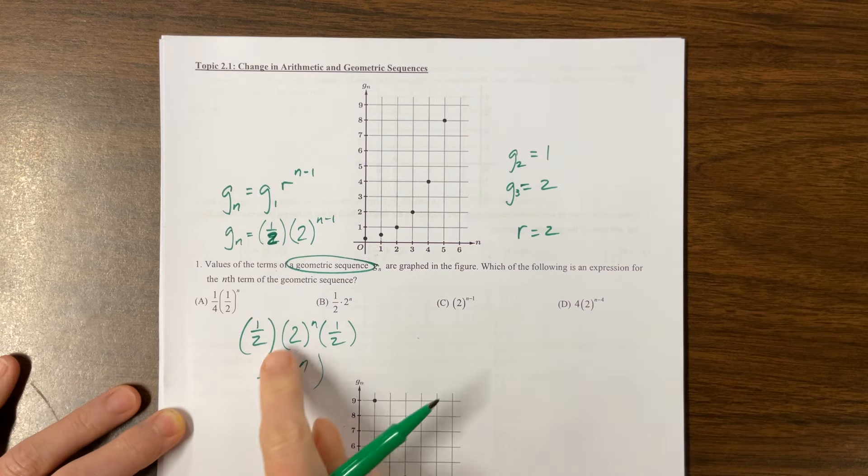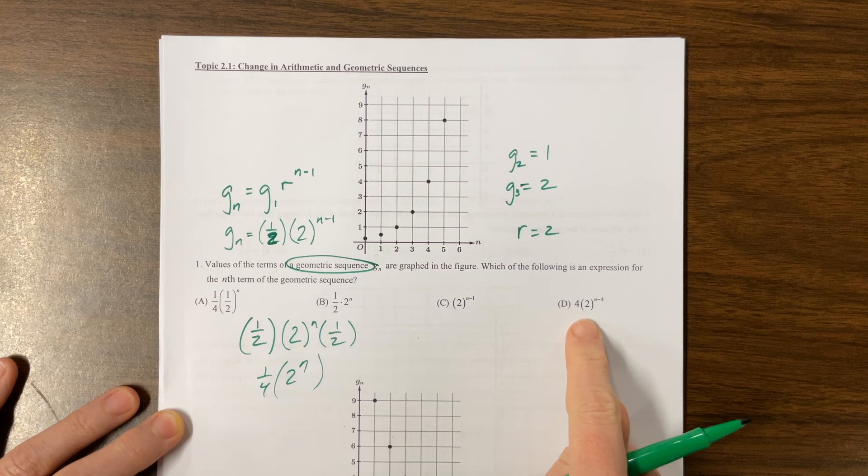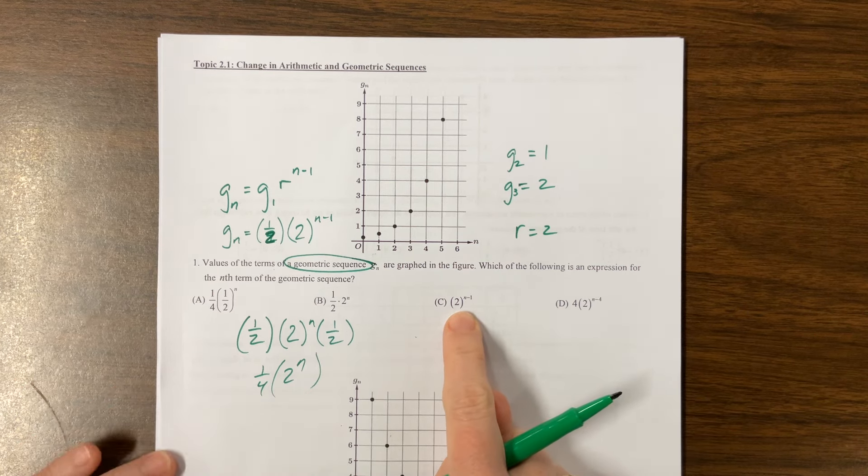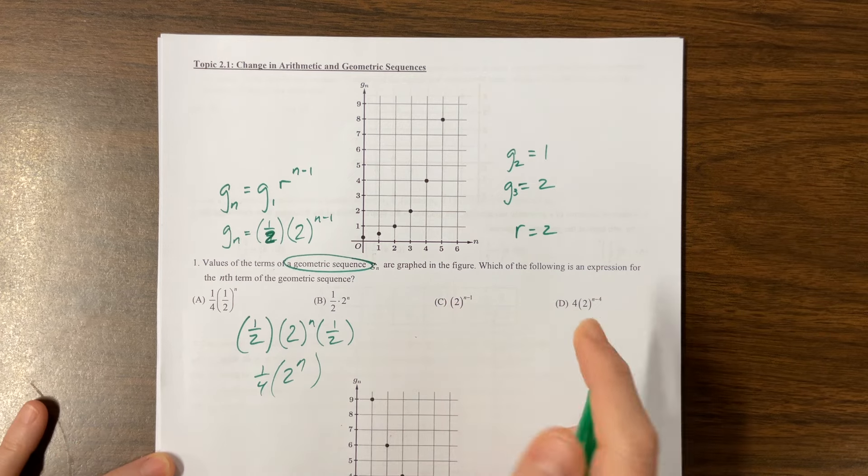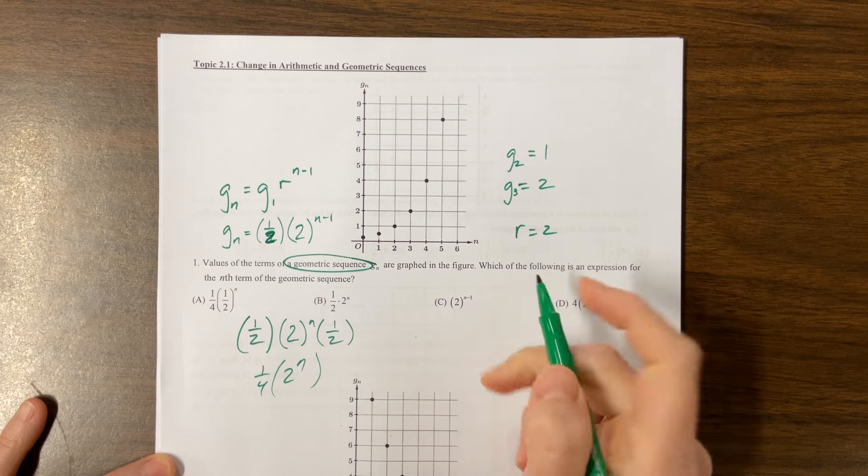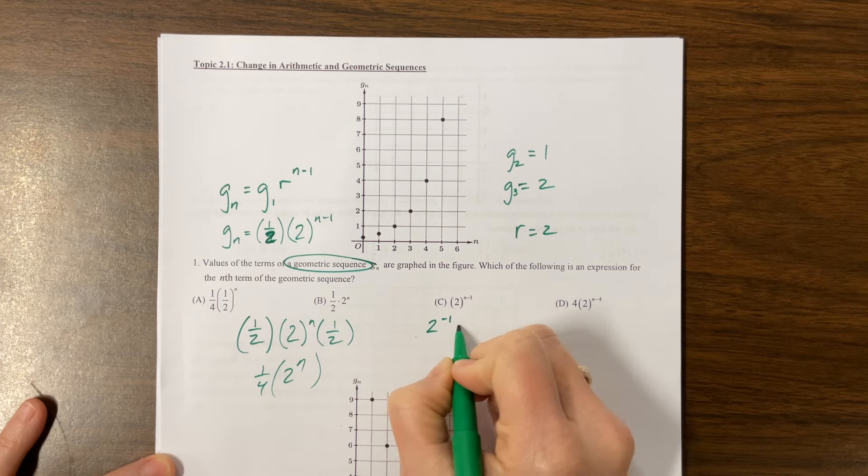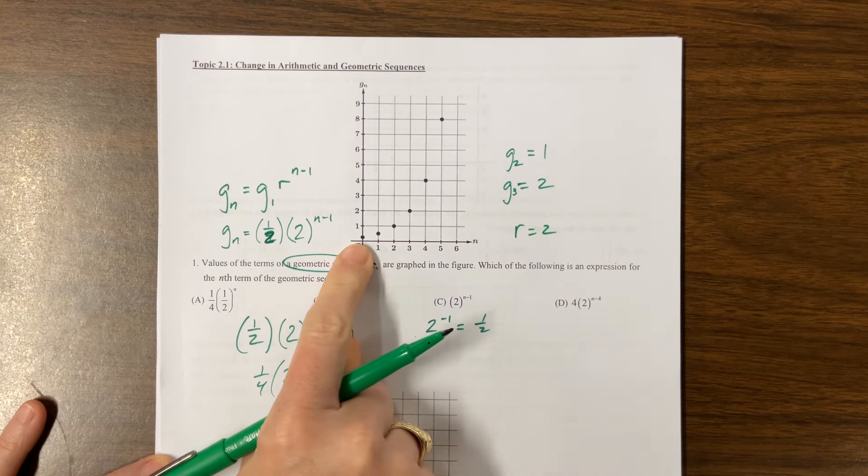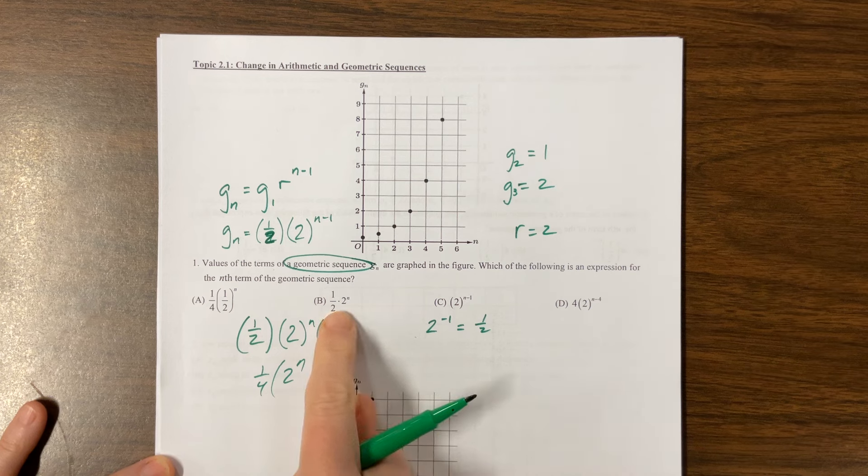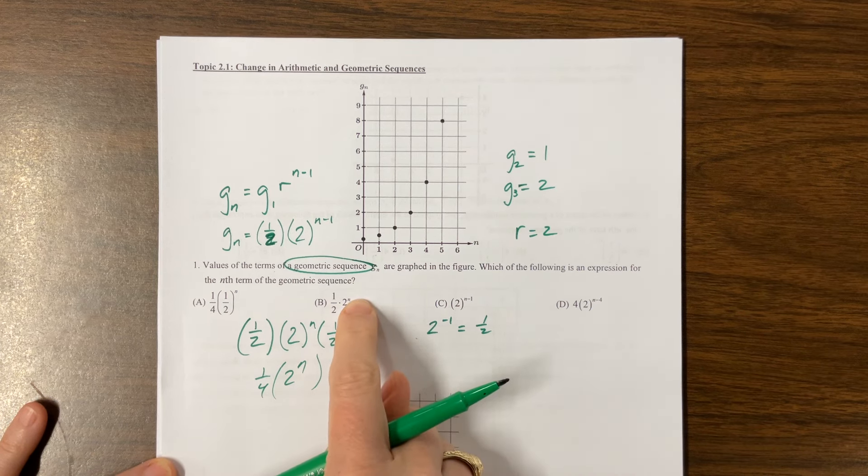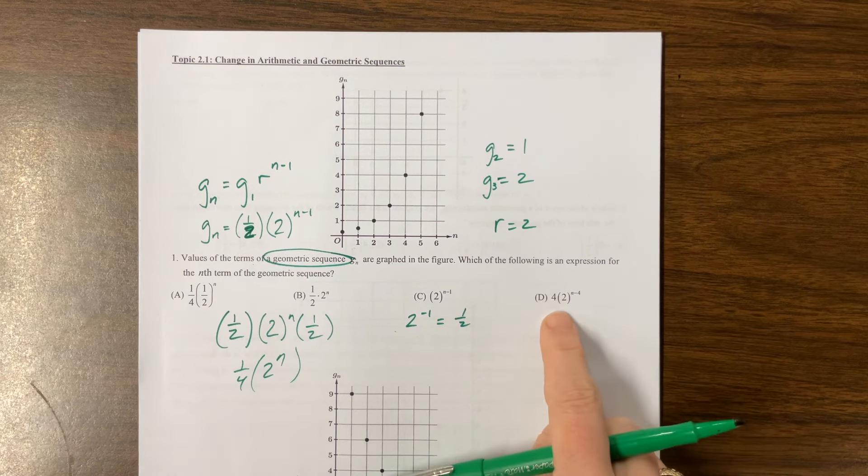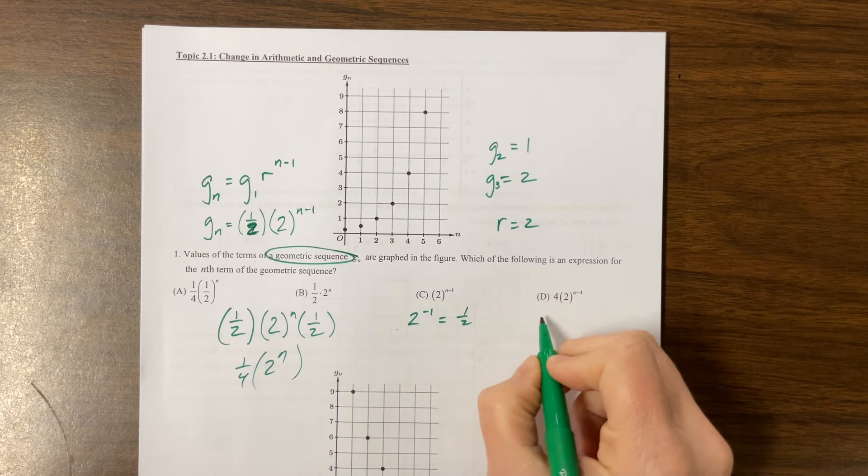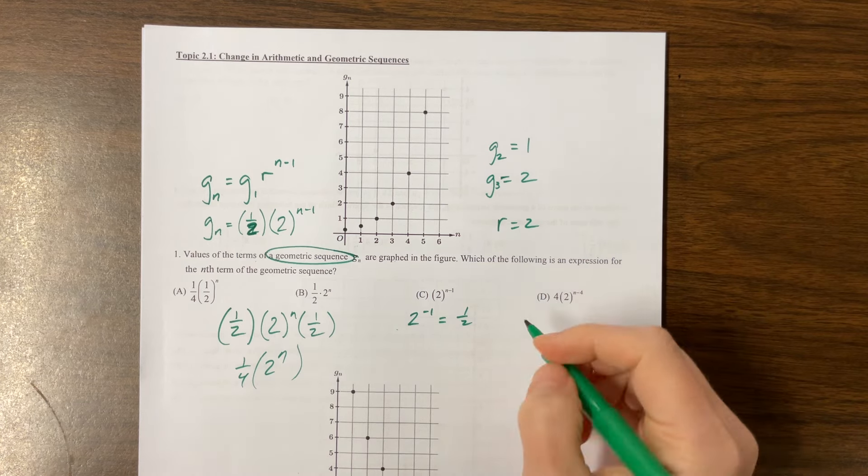So do we have one half times 2 to the n? You know what? This may have been right to begin with. Oh my. Okay. This doesn't bode well. I think I'm a little off today. Because my equation, the way I did it, my initial amount at my first term is one half times the common ratio raised to the n minus one power.